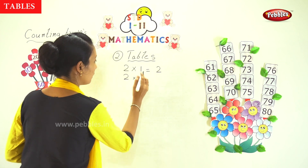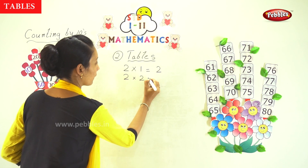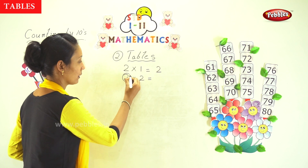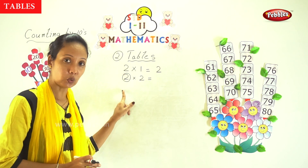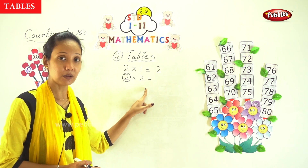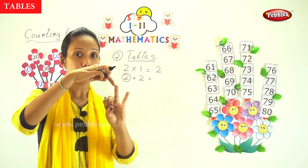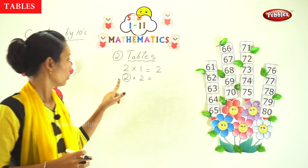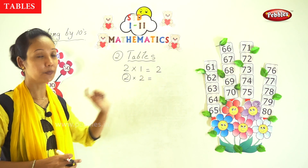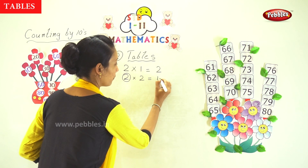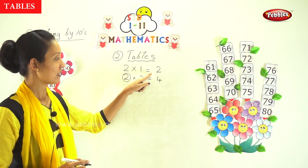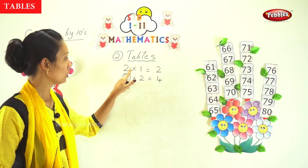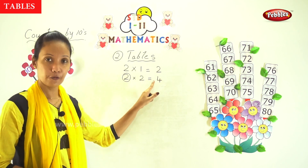Now, 2 into 2. This 2, taken 2 times — here is 2 and here is 2 again. You have 2 and 2 together, that is 4. So 2 into 2 is equal to 4. In short form you can say: 2 ones are 2, 2 twos are 4.